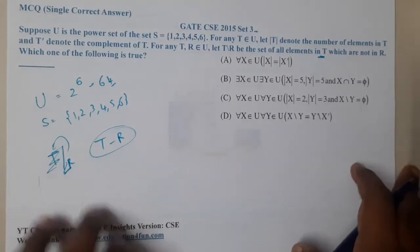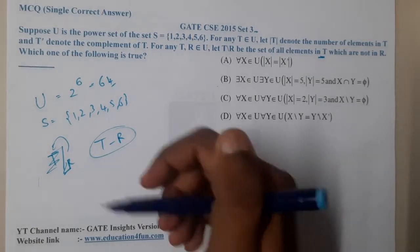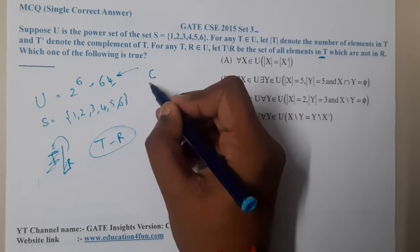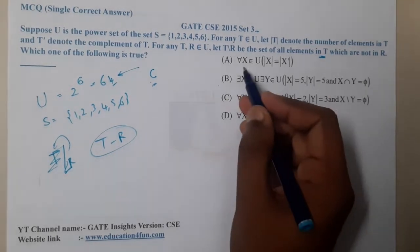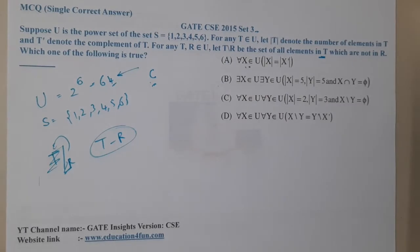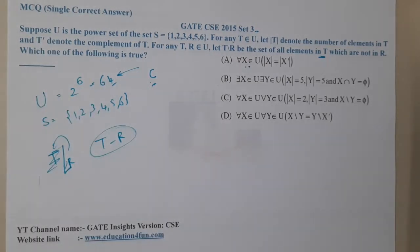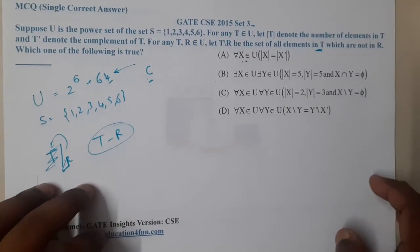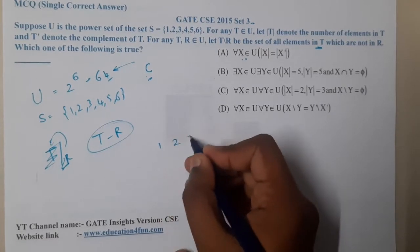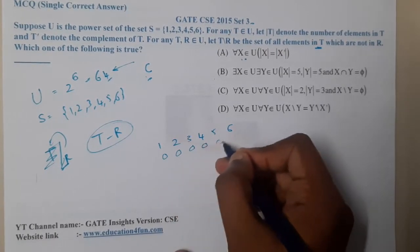Let us analyze the options. Option A says: for all x belonging to U, |x| = |x'|. This is one of the easiest conditions to eliminate. When we talk about subsets of {1,2,3,4,5,6}, we start with the empty set (all zeros) and go up to the full set (all ones).